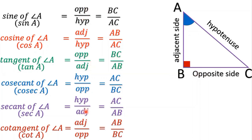These are called trigonometric ratios. We have six trigonometric ratios: sin A, cos A, and tan A — and their reciprocals cosec A, sec A, and cot A. These are the important trigonometric ratios.